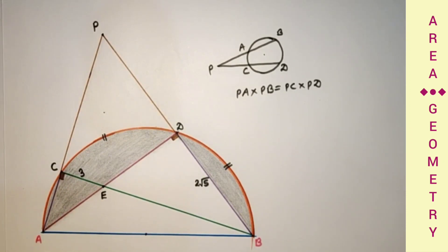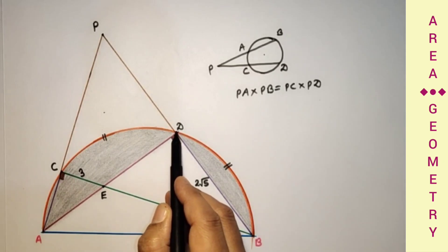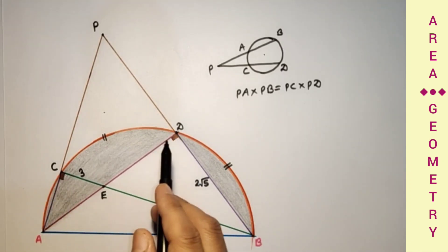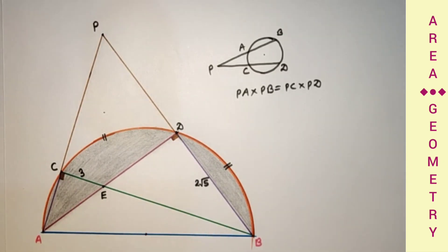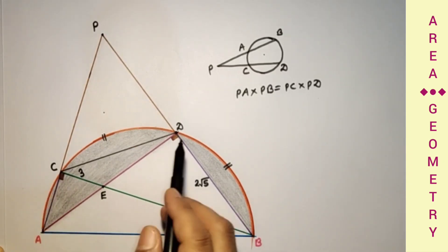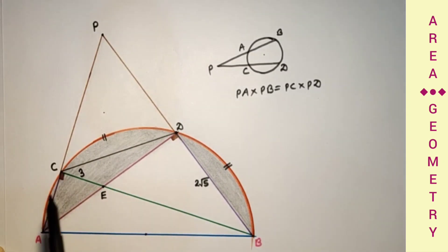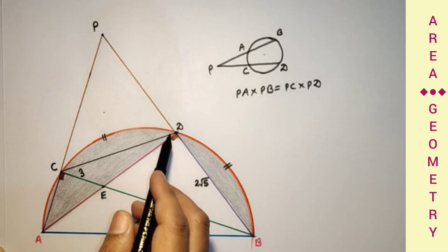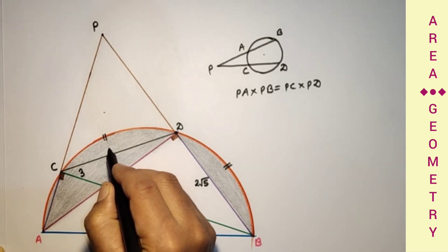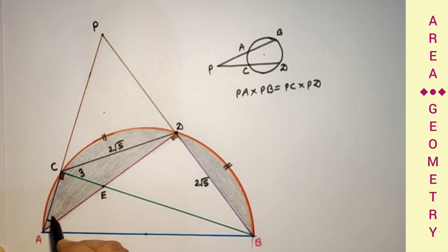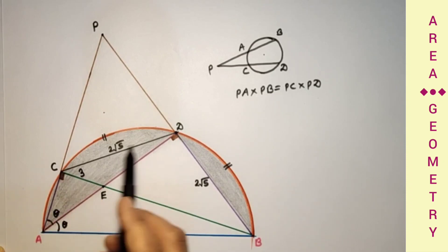Since D is the midpoint of minor arc BC, if we join chord DC, equal arcs subtend equal chords, so CD equals DB. Since BD is 2√5, CD is also 2√5. Now, equal chords subtend equal angles. If this angle is theta, then this angle will also be theta, because DB and DC are equal and equal chords subtend equal angles.